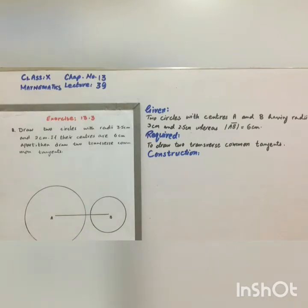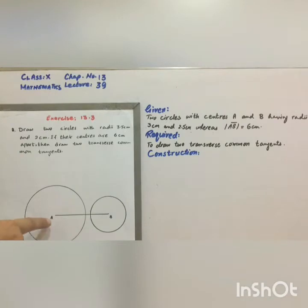We have to draw two transverse common tangents. First of all, one thing must be clear that while drawing common tangents, either direct or transverse common tangents, the third circle must be drawn at the center of the larger circle. Here A is the center of the larger circle, so we shall draw the third circle with the same center that is A. Let's start our work with step number 1.